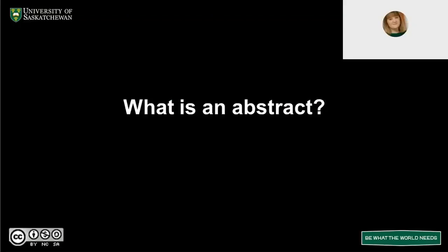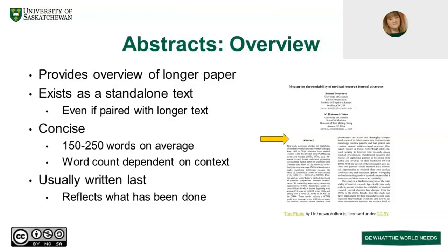So our first question today: what is an abstract? An abstract is a piece of text that provides an overview of a longer paper — a bird's-eye view of a larger piece of text. Crucially, it exists as a standalone piece of writing. Even when paired with a longer paper, it still has to stand on its own. It's a very short, concise piece of writing, usually between 150 to 250 words.